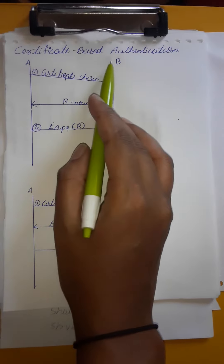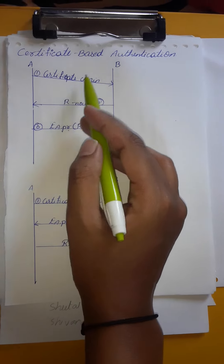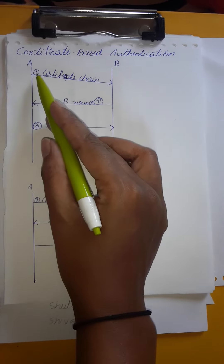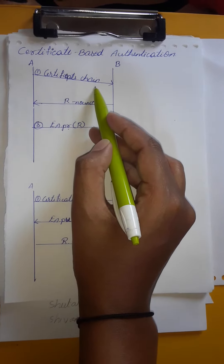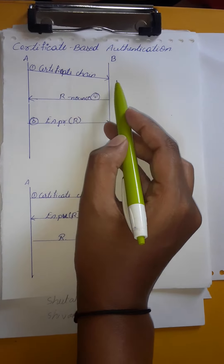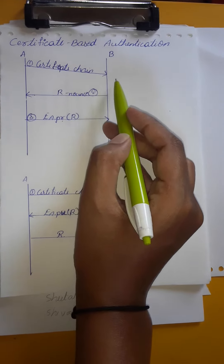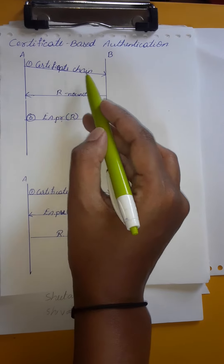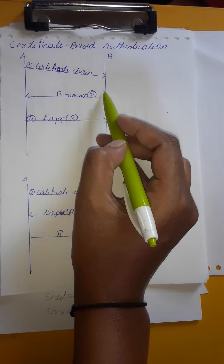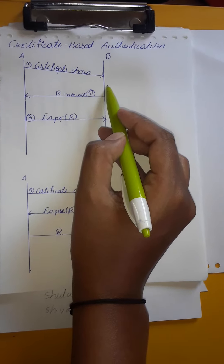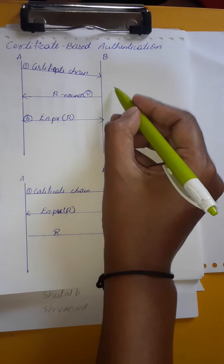Today's topic is certificate-based authentication. It is the second type of one-way authentication. Here, A will send a certificate chain instead of sending a secret key to B. A will send his public key certificate, which will be present in the certificate chain. After receiving that certificate, B is going to check its validity period as well as the signature of the CA.